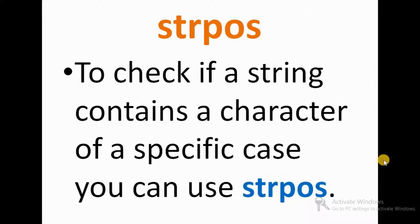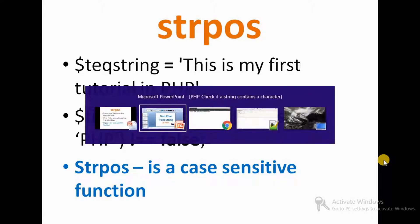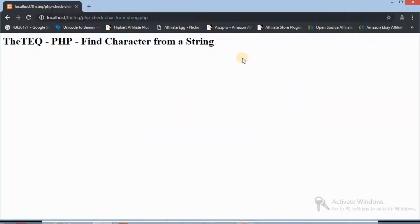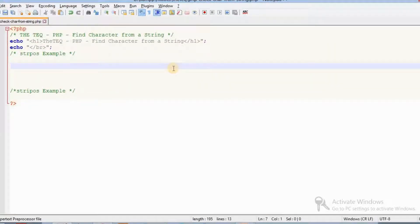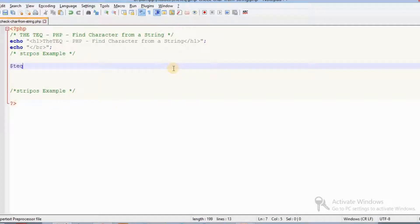In this tutorial we are going to look at a function called strpos — that's the string position function — to check if a string contains a particular character or string. For example, the string 'Tech Queue, this is my first tutorial in PHP.' We have to check whether that string contains 'PHP' or not. strpos is a case-sensitive function.